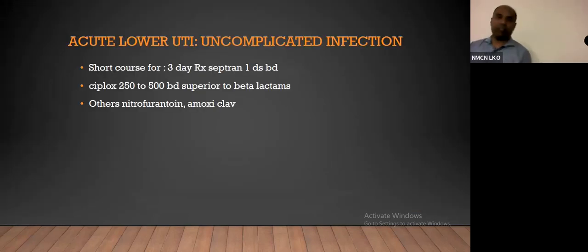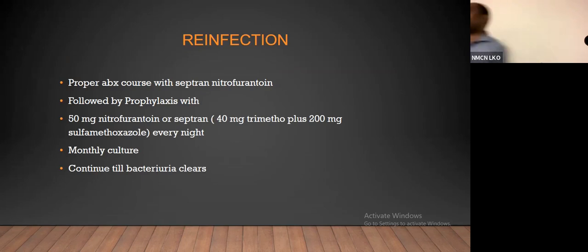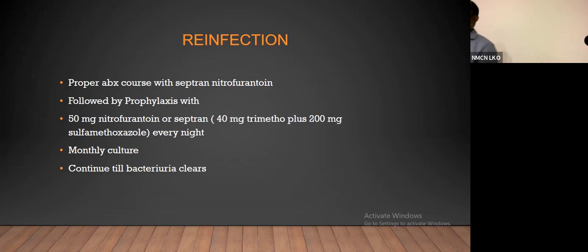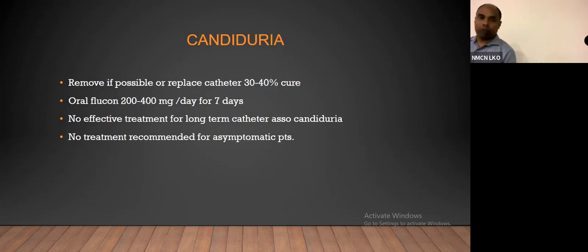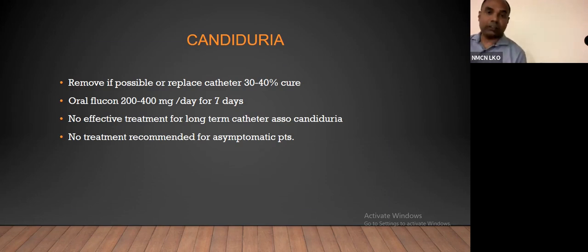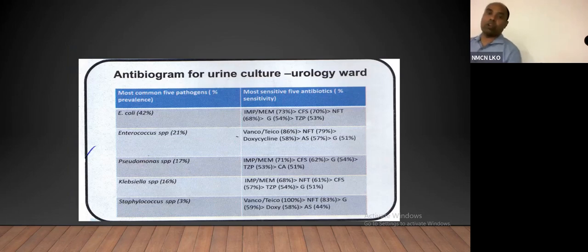For short-course lower UTI, you need 3 days of treatment — nitrofurantoin is good enough. For prevention of reinfection, when a patient has more than 3 episodes of recurrent infections, you need to put them on prophylaxis, and the prophylaxis is usually nitrofurantoin. For Candida UTI, the best thing is to remove the catheter, and you need at least two positive samples before treating. You can use fluconazole, but if you have very severe infection then you can use an echinocandin as guidance suggests. Thank you.